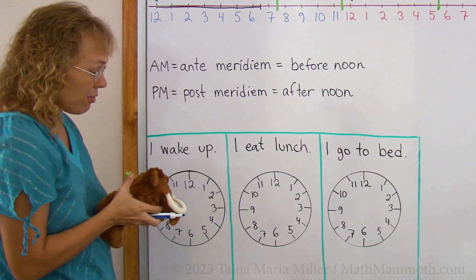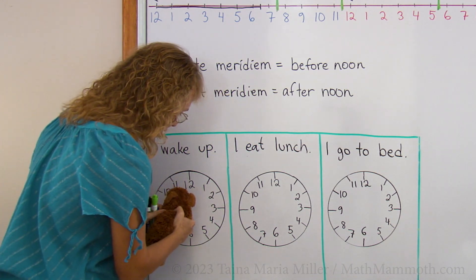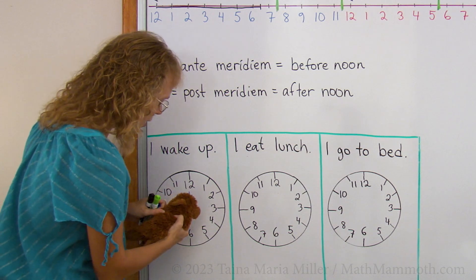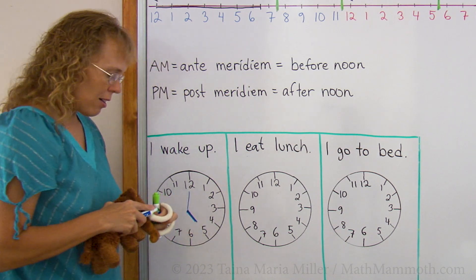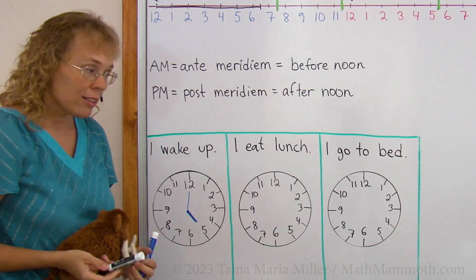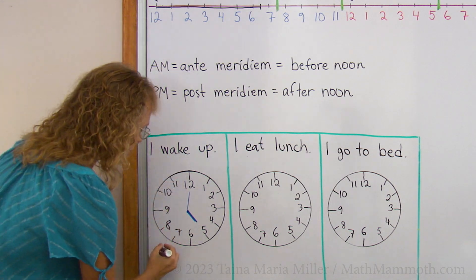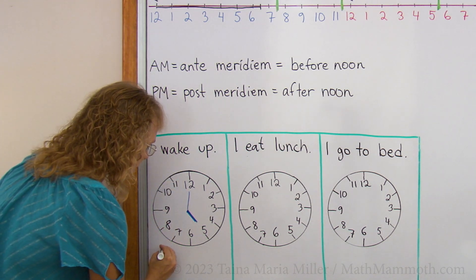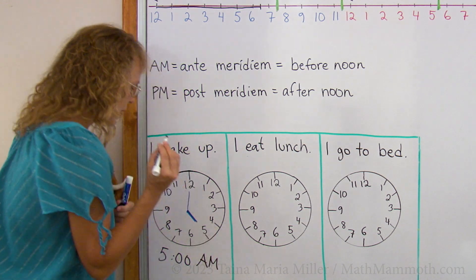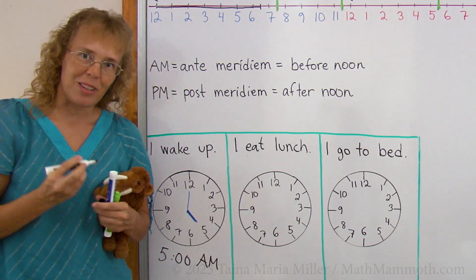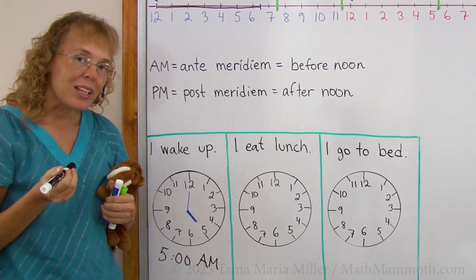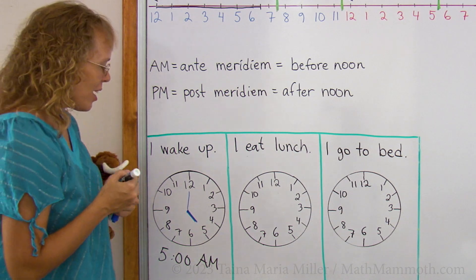He says five. Minute hand and the hour hand. And now we will write the time, and when we write this time, we need to write it like this. We need to put the AM there, so we know it is 5 o'clock in the morning, okay?